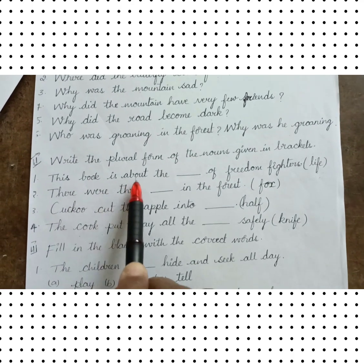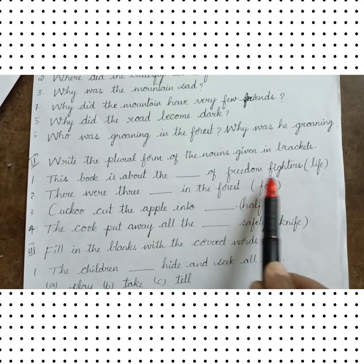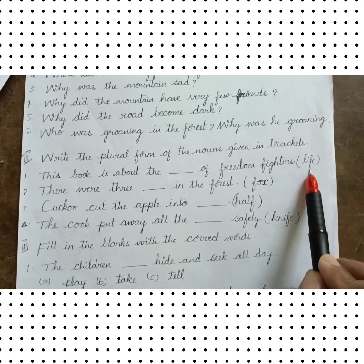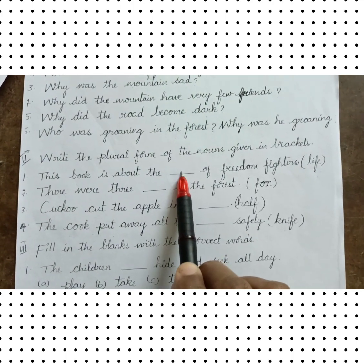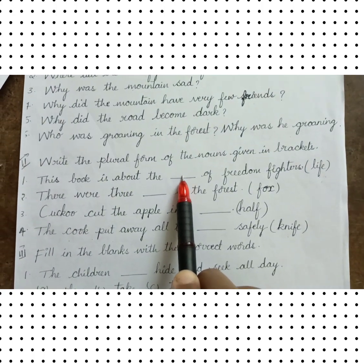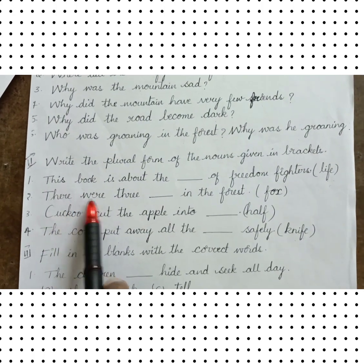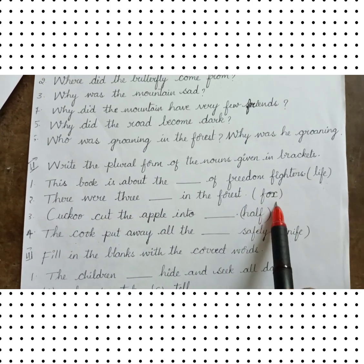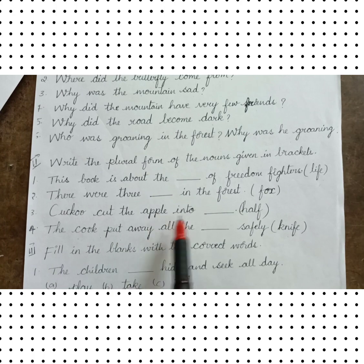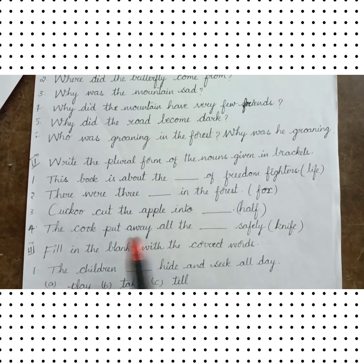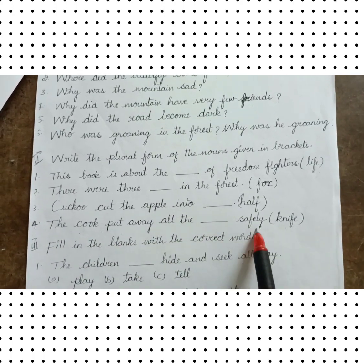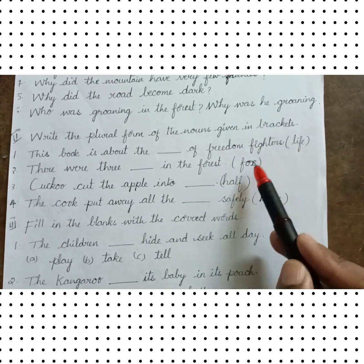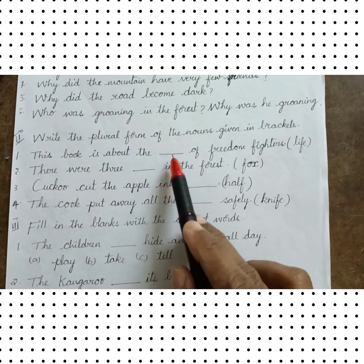This book is about the dash of freedom fighters — brackets: 'life' — so you have to change this word and write the plural form in the given blank. Second, there were three dash in the forest. It is fox. The cook put away all the dash safely — in brackets: 'knife'. So you have to change these words into plural forms and write in the given blank.